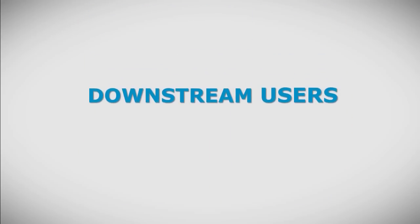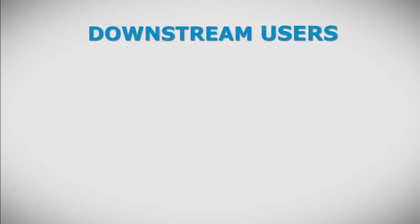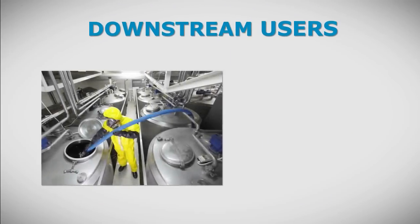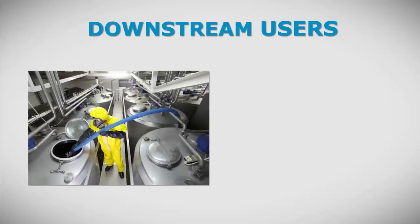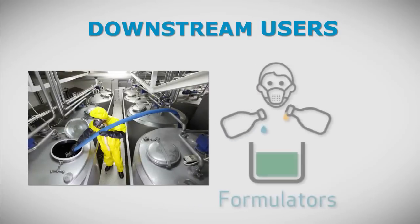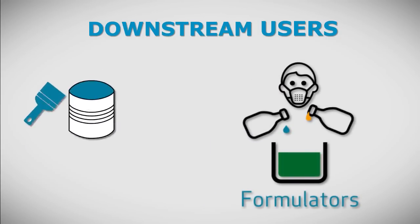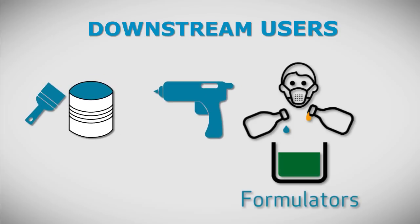Downstream users undertake different types of activity. Downstream users who produce and supply mixtures to their customers are called formulators. These mixtures could be paints, adhesives, detergents, diluted substances, and so on.